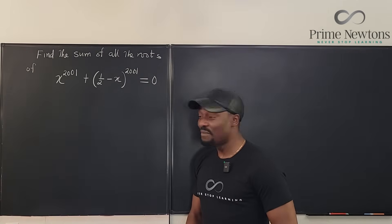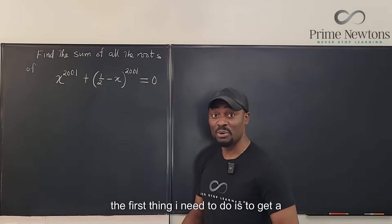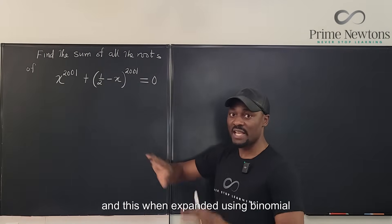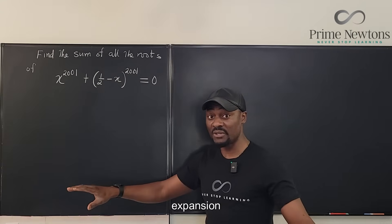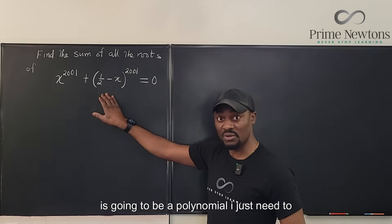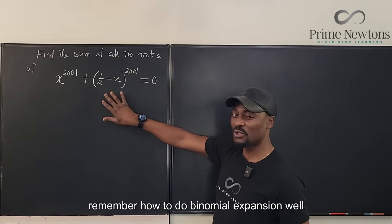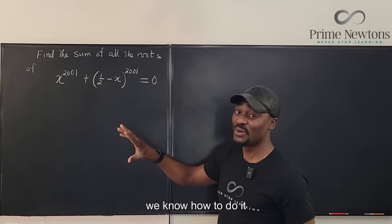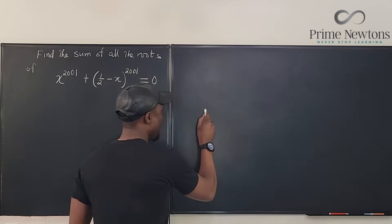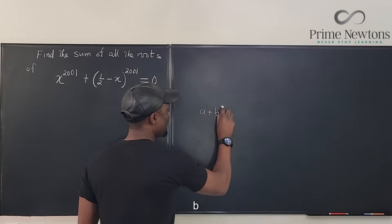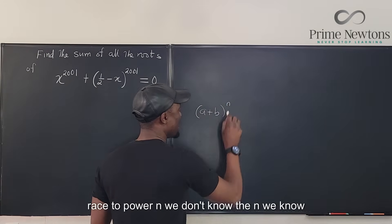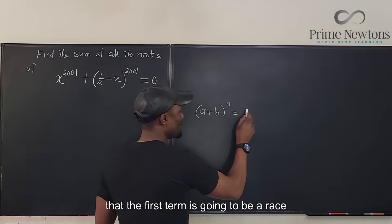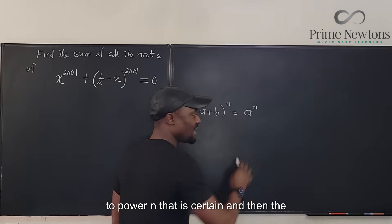The first thing I need to do is get a polynomial. This one is already a polynomial, and this, when expanded using binomial expansion, is going to be a polynomial. I just need to remember how to do binomial expansion. Whenever we have (a + b) raised to power n, the first term is going to be a raised to power n.